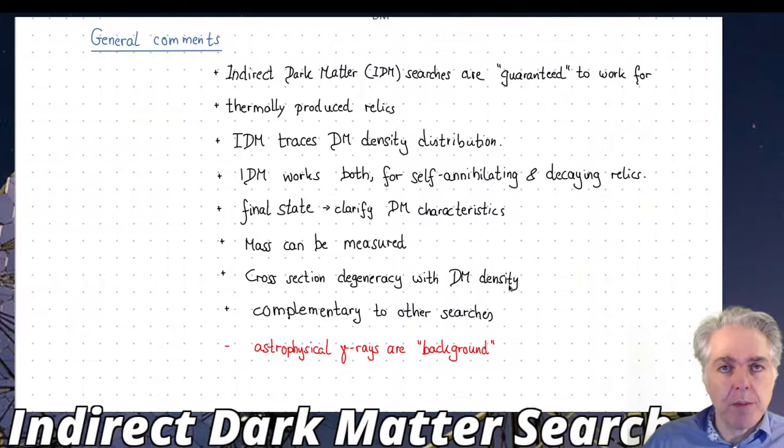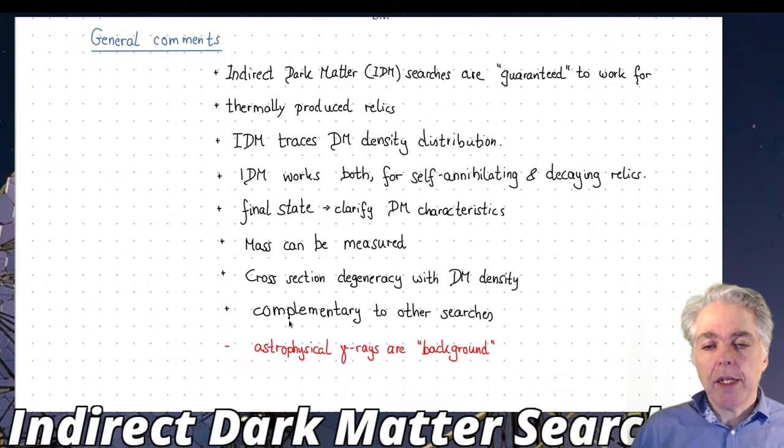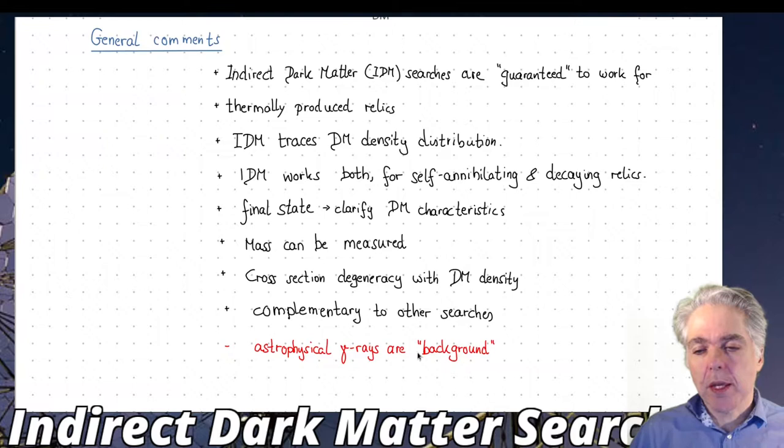There is, of course, if you want to measure the cross-section, a degeneracy with the dark matter density because it's a product of dark matter density and the cross-section which gives the signal. The nice thing about indirect dark matter is it's completely complementary to other searches. There's also astrophysical gamma rays as background. This is bad in the sense that it makes it difficult to disentangle in some cases the signal, but for the dwarf galaxies this is not an issue.